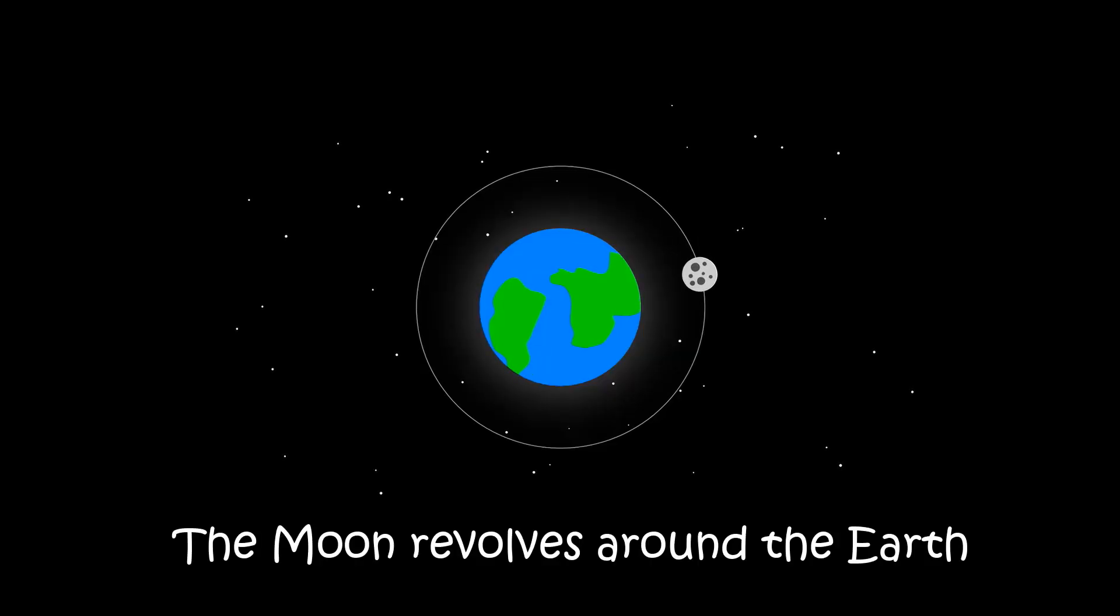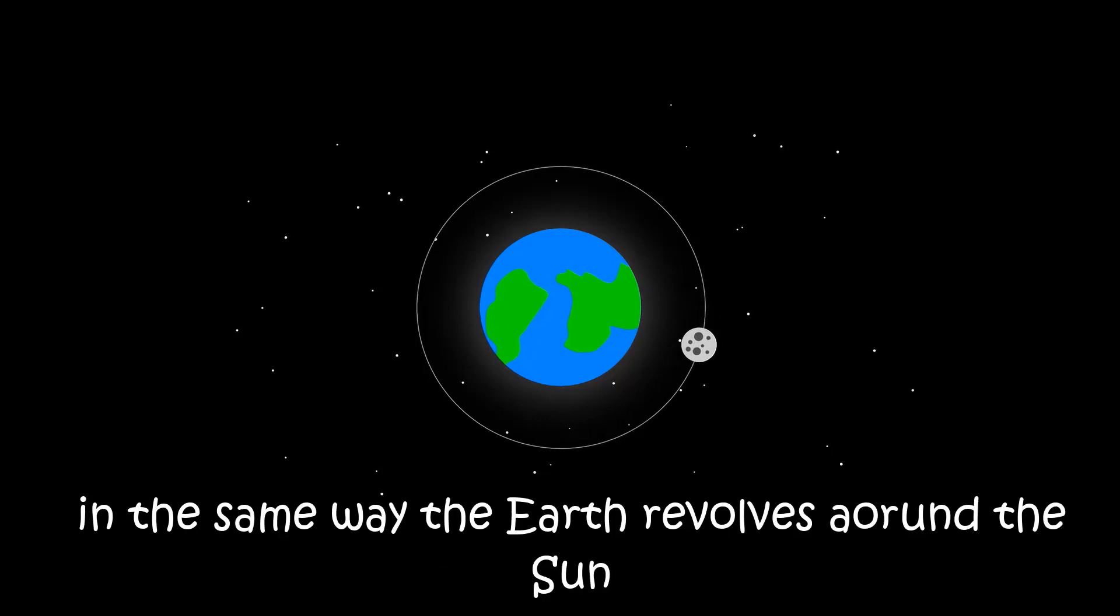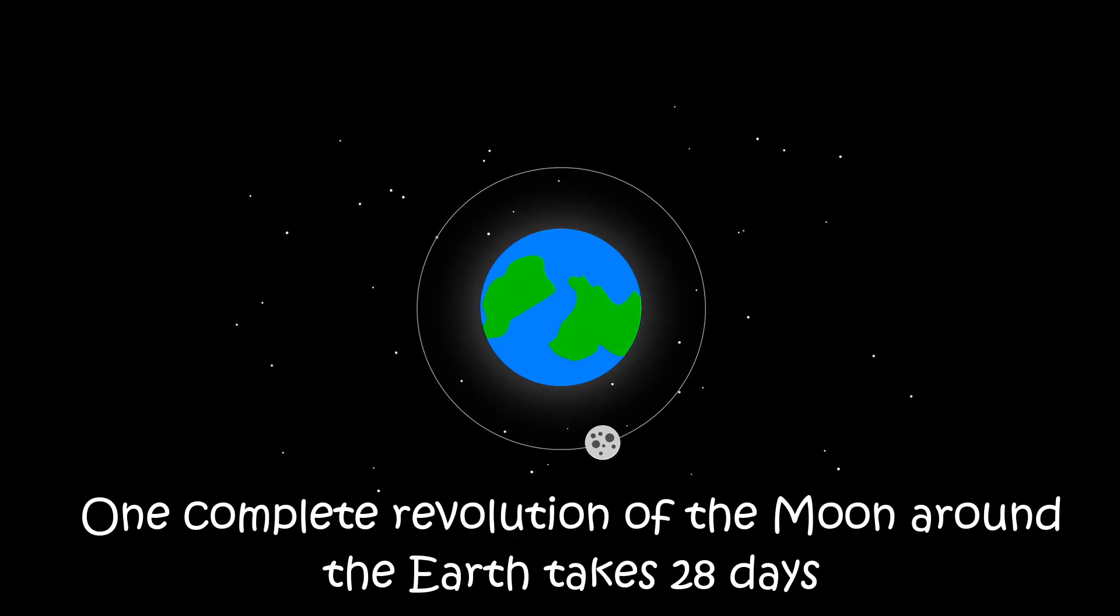The moon revolves around the earth in the same way the earth revolves around the sun. One complete revolution of the moon around the earth takes 28 days.